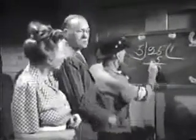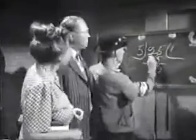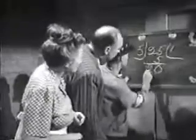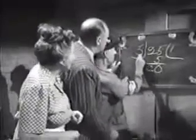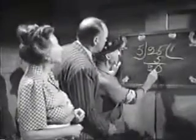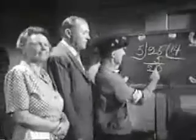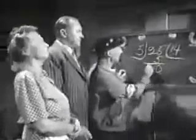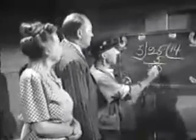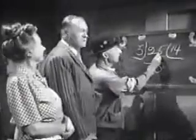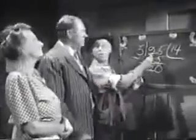Now, we didn't use the 2 before, so we'll bring it down here. Now, 5 into 20 goes 4 times. There you are. 5 into 25 is 14.